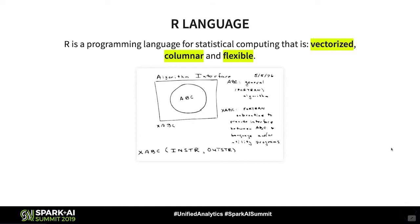So what is R? If you look at the R website, the definition is: R is a programming language for statistical computing. What's really interesting is that if you look for the definition of data science, a lot of people mention it's a discipline that uses statistics and advancements in computer science. So R as a programming language was designed for doing data science. The three things I want to highlight about R: it is vectorized, and more importantly for this talk, it's columnar.